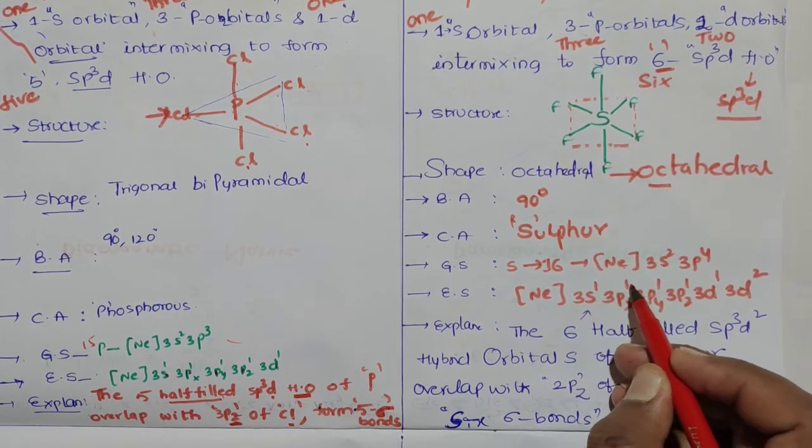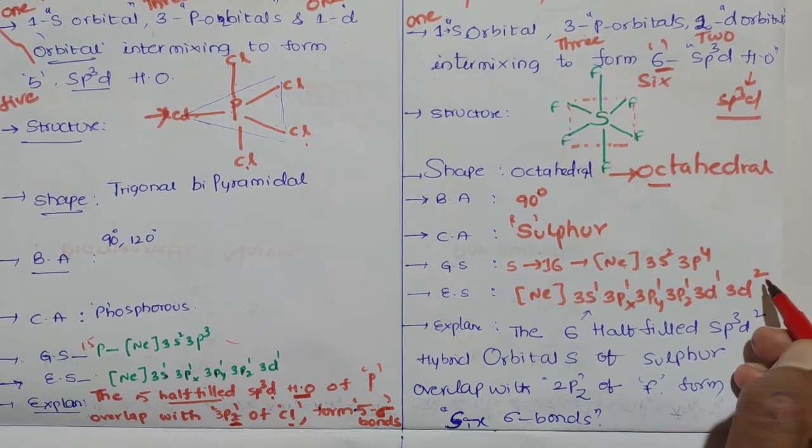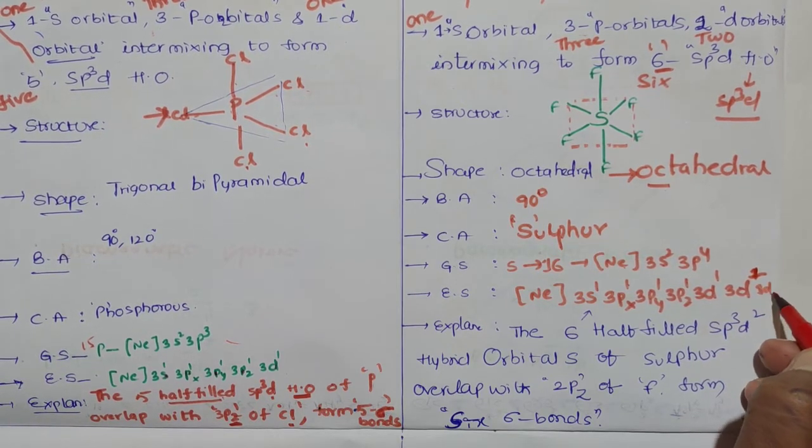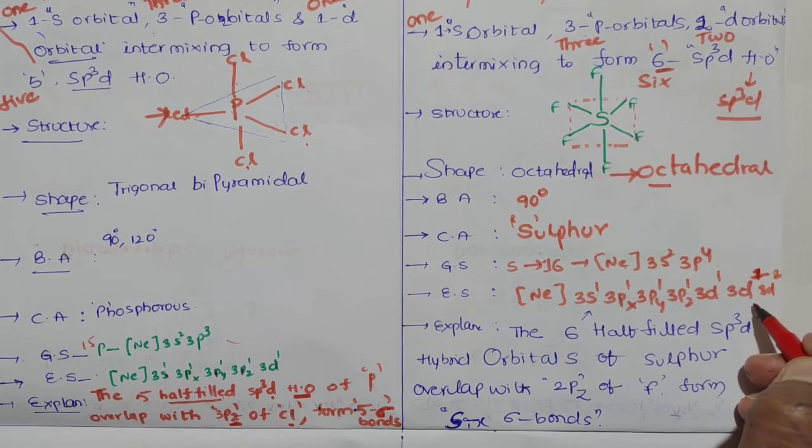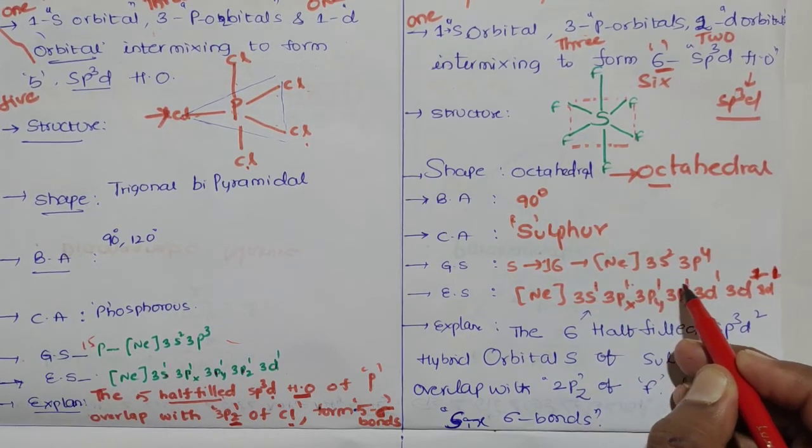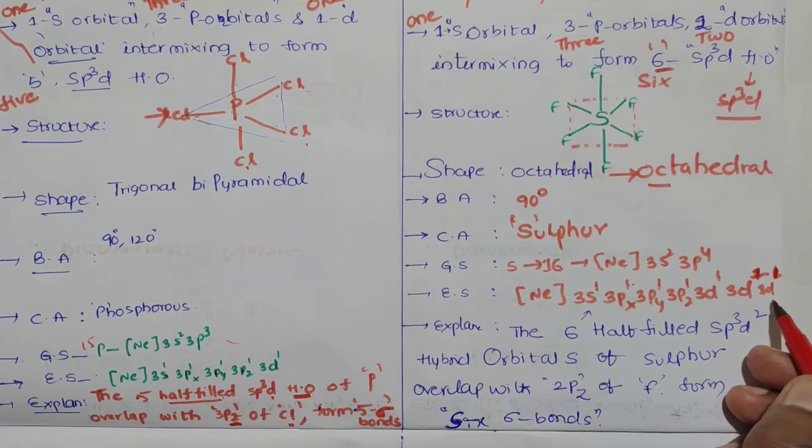In excited state, the pair in 3s orbital gets excited to 3d orbitals. We have five d orbitals: 3d¹ and another 3d², individual electrons. Total six orbitals: xy, yz, zx, x²-y², z². The x²-y² and z² orbitals are along the axis and are involved in hybridization.